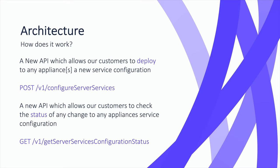Two subsequent APIs support the reconfiguration of services on appliances. The first is a REST POST call called Configure Server Services — this API call is used to send a new JSON service descriptor for the target appliances and returns a job token as a response. The final call we've added is a REST GET call, Get Server Services Configuration Status, which accepts the job token from the Configure Server Services API and provides feedback on the reconfiguration task, returning status JSON that details the reconfiguration in granular detail — whether changes succeeded, failed, or are still being carried out.